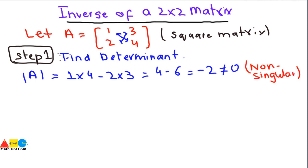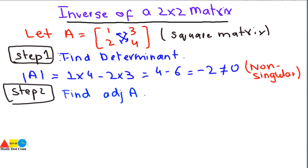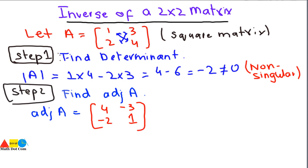This first step tells you whether the matrix is non-singular so you can proceed further. Step 2 is to find the adjoint of A. As we have already seen in our previous lecture, since it is a 2×2 matrix we can use a shortcut method or a co-factor method. Using the shortcut method, the adjoint of A is obtained by swapping the diagonal elements and changing the signs of the off-diagonal elements.